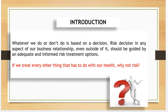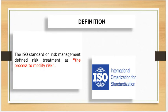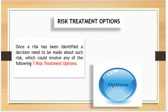One of the things we often treat is our health — and if we can treat our health, why not risk? The ISO standard defines risk treatment as a process to modify risk. In other words, risk can be modified: you can modify the frequency, the severity, the probability of occurrence, or the impact of its occurrence. The way the risk is modified is referred to as the treatment of the risk.